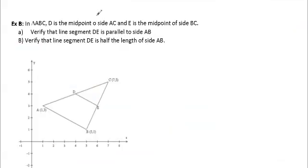So in triangle ABC, D is the midpoint of side AC, and E is the midpoint of side BC. If you can't read this, A is (1,3), C is (7,5), and B is (5,1). So I'm going to ask you to do this and bring it to class. So that is your job. Before you get to class, I want you to find D and E, right? Verify that line segment DE is parallel to side AB. So to do that, we're going to find both slopes and prove that they're equal.